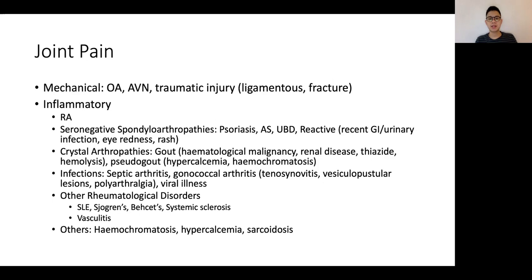GI symptoms are relevant for IBD-associated arthritis as well as reactive arthritis. The next important group would be the crystal arthropathies. Gout and pseudogout are conditions seen commonly in practice; however, in the PACES exam it is important to ascertain whether there's a secondary underlying etiology. For gout, secondary etiologies could include hematological malignancies, renal disease, thiazide diuretics, or hemolysis, and poor control can be attributed to dietary factors or dehydration. Pseudogout can be associated with hypercalcemia and hemochromatosis.